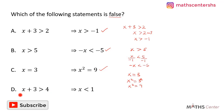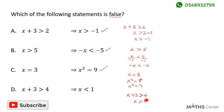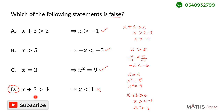This means that the final statement will be false, but let's work it out anyway. The statement is: x plus 3 is greater than 4 implies x is less than 1. Solving the inequality gives x is greater than 4 minus 3, so x is greater than 1. But the statement says x is less than 1, which is not true. So statement D is false, meaning the correct answer is D.